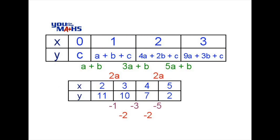Our new table at the top of the screen shows the y values when we substitute x equals 0, 1, 2, and 3 into the algebraic equation y equals ax squared plus bx plus c. We suggest you pause here and check that you agree with those y values. We've then proceeded to find the first difference. In green you can see that the first difference between a plus b plus c and c is a plus b. We've then found the second differences, shown in red — in both cases it's 2a, because we have a constant second difference based on a quadratic rule.